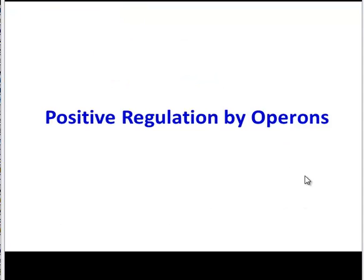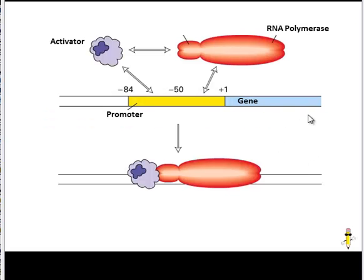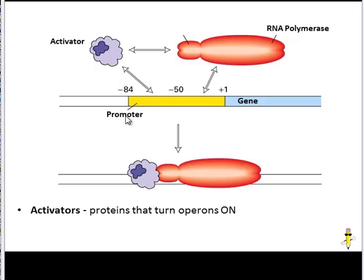There's one more type: positive regulation by operons. In this case, we're not using a repressor protein. Here's our operon — the regulatory protein is an activator. And when that activator binds to the promoter region, it helps RNA polymerase transcribe and translate genes. And so that is a close look at how prokaryotic cells, like bacteria, regulate their genes in order to respond to the environment and conserve resources.